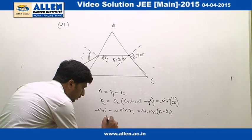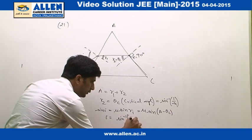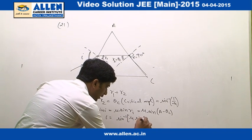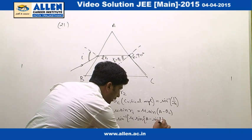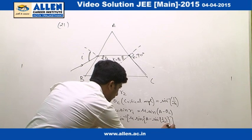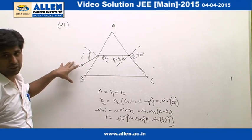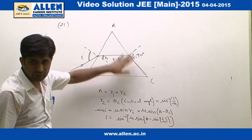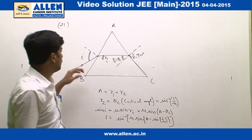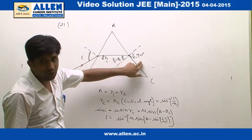Therefore the value of i is sine inverse mu sine A minus sine inverse 1 by mu. Since we have to find range of theta for which transmission takes place at face AC, therefore we have to increase the angle to decrease the angle of emergence.